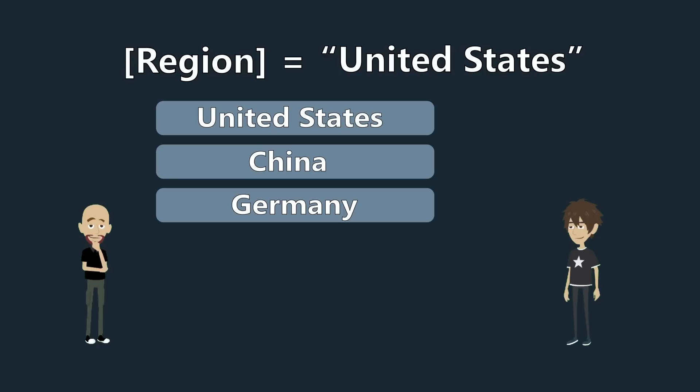By creating a rule that restricts region to United States and then adding John Doe to that role within Power BI, he will only be able to see the rows where the region is United States. He's not going to see any of the other regions.